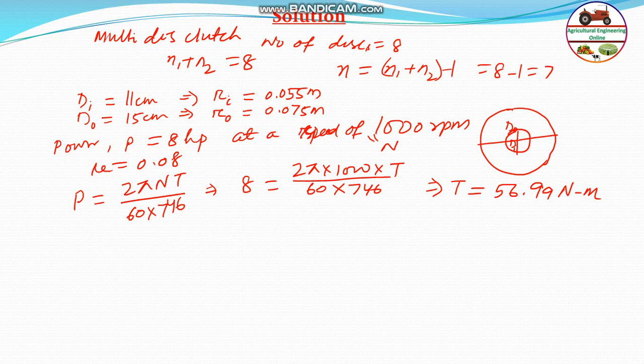This torque is transmitted by 7 pairs of contact surfaces. The torque equation is T = n × μ × F × R, where n is the number of contact surfaces, μ is the coefficient of friction, F is the axial load on the spring, and R is the mean radius of the clutch.